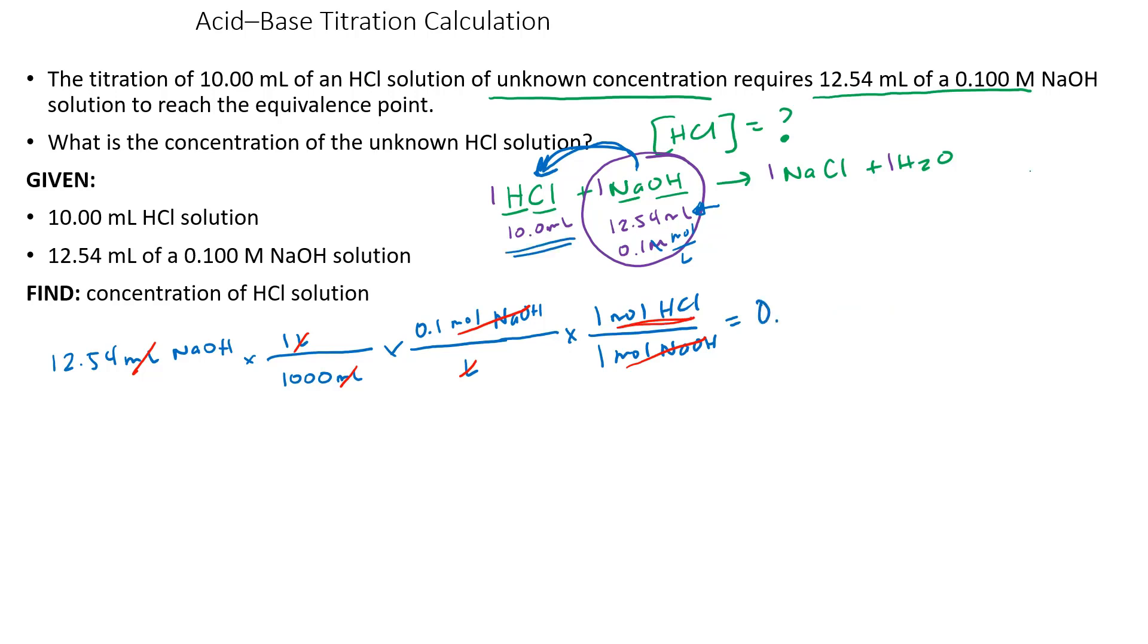This would end up being 0.001254 moles of HCl. Remember, molarity is equal to moles of the solute divided by liters, and the liters of the HCl is 0.01 liters because 10 milliliters is 0.010 liters. If I divide 0.001254 by 0.01 liters, I end up getting 0.1254 molar HCl.